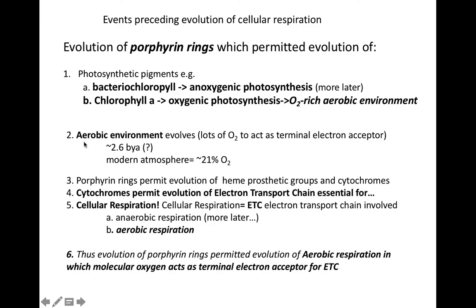The conversion from an anaerobic to aerobic environment — roughly around 2.6 billion years ago, about a billion years after the first cells evolved — gave us a relatively aerobic environment. Today our atmosphere has a 21% molecular oxygen content. In addition, the evolution of porphyrin rings also permitted evolution of heme prosthetic groups, which are crucial parts of cytochromes — our electron carriers in the ETC. When cytochromes evolved, that permitted evolution of the electron transport chain, essential for aerobic respiration.